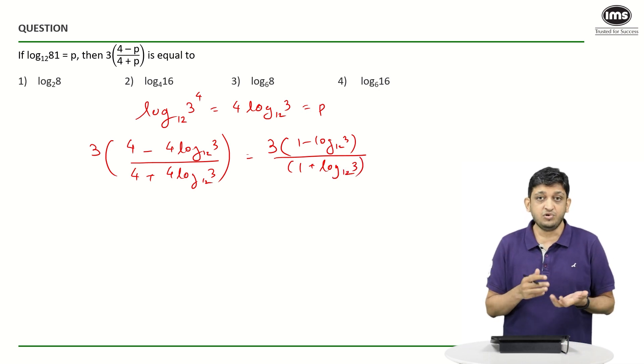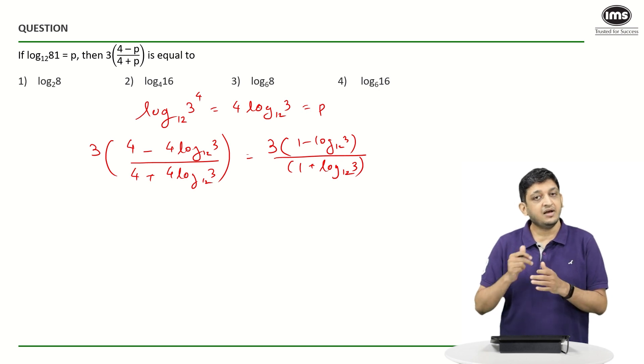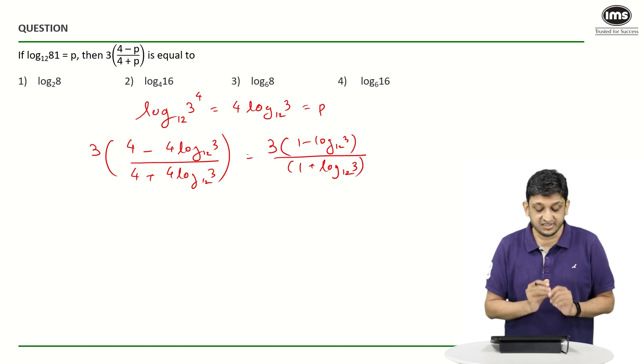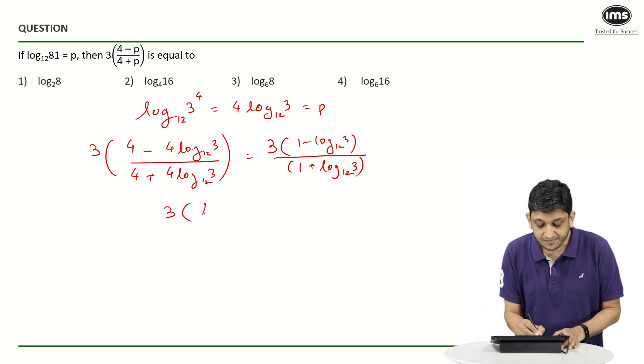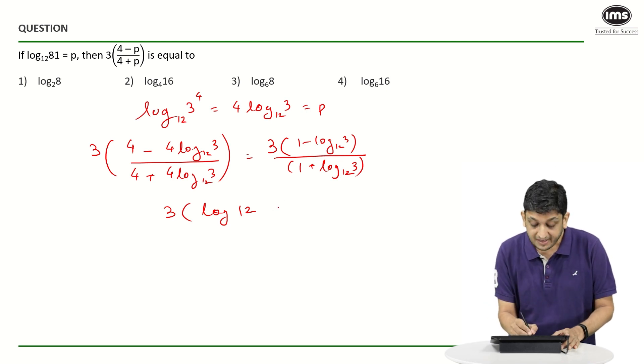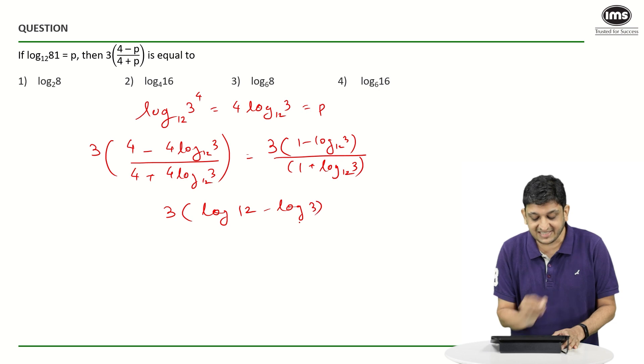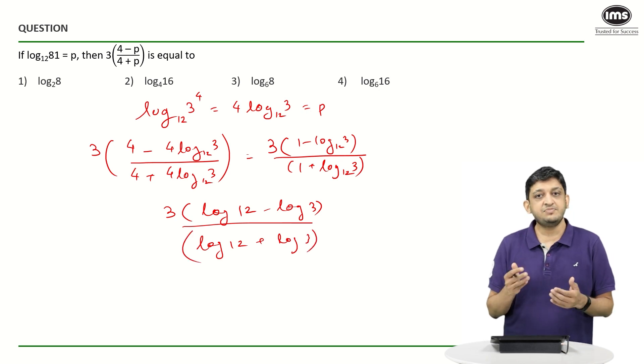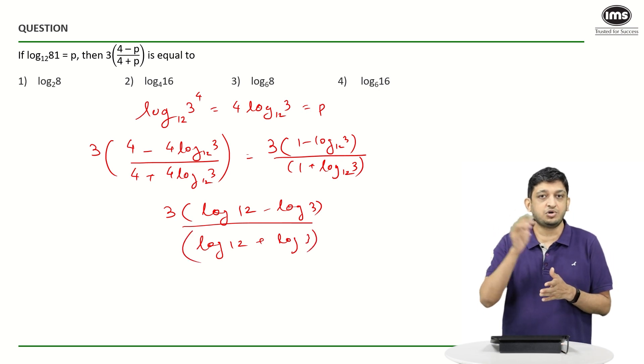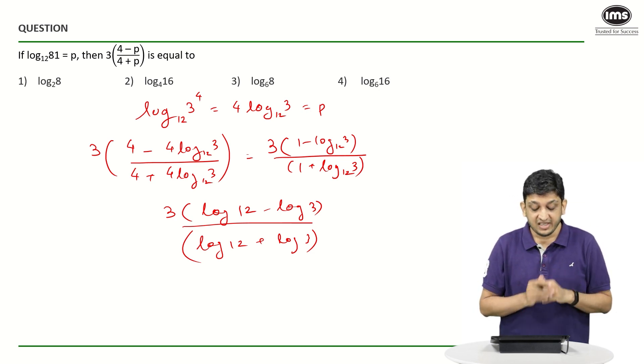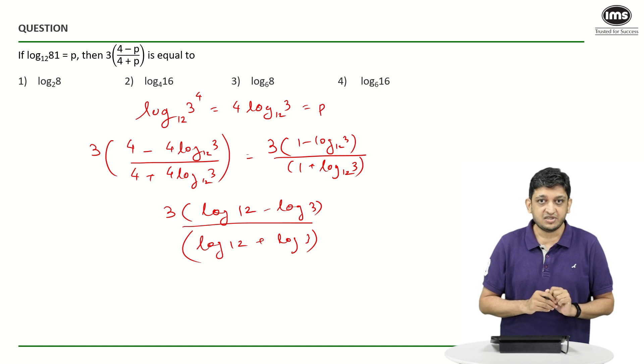If you know that log 3 to the base 12 is nothing but log 3 divided by log 12 to the same base, we can write this expression in the form of 3 times log 12 say to the base 10 minus log 3 as it is and the denominator will simply become log 12 plus log 3. This is because we have cancelled out the log 12 from the denominators of both the numerator and the denominator. That is why we get this particular term.